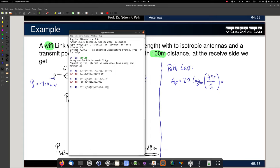which is 20 times log 10 and 4 times pi times 100 over 0.12 was my lambda, and I get 80.4 dB.